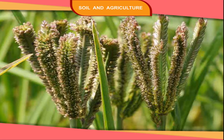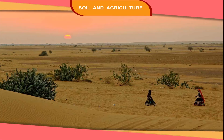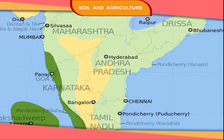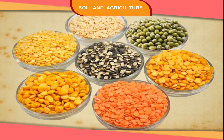Millets: Jowar, Bajra and Raghi are millets. They are grown in low rainfall and less fertile areas. Rajasthan, Gujarat and Karnataka are main producers of millets.